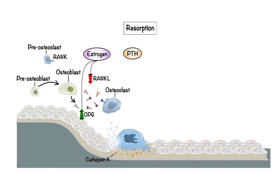In contrast, PTH plays a more intricate role in bone remodeling. At low intermittent doses, PTH stimulates bone formation by promoting osteoblast differentiation and activity. However, at high or continuous levels, PTH can increase bone resorption by indirectly stimulating osteoclast activity through increased RANKL expression and decreased OPG production.